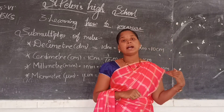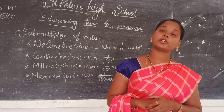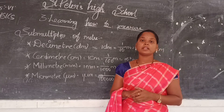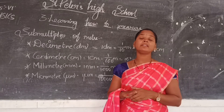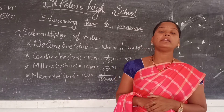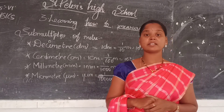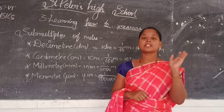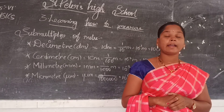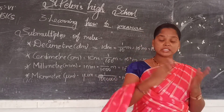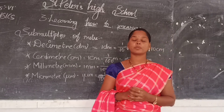We also learnt about the astronomical unit and light year. The astronomical unit is equal to 1.496 × 10¹¹ meters — it is the distance from the Earth to the Sun's surface. Light year is the distance travelled by light in 1 year, that is, the speed of light multiplied by 1 year of time. The speed of light is 3 × 10⁸ meters per second.